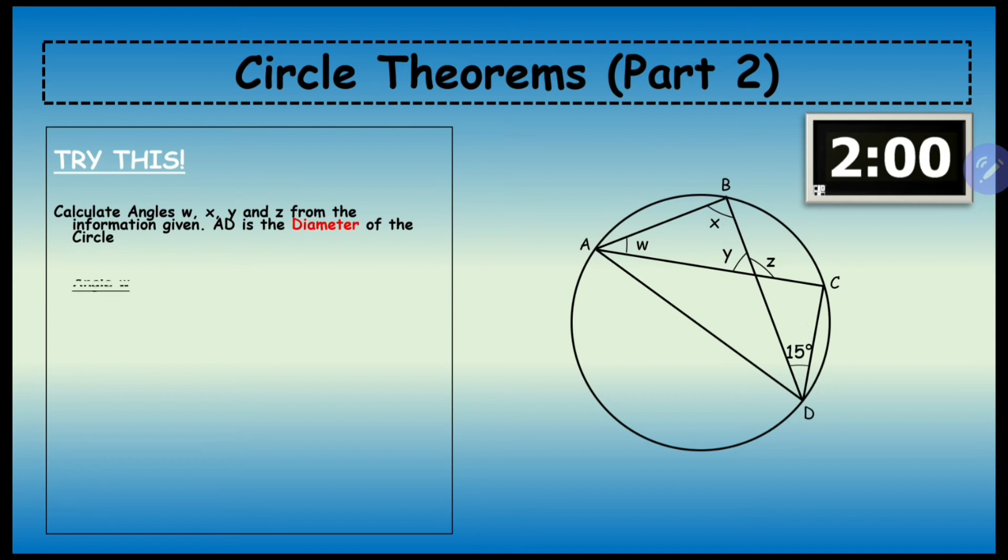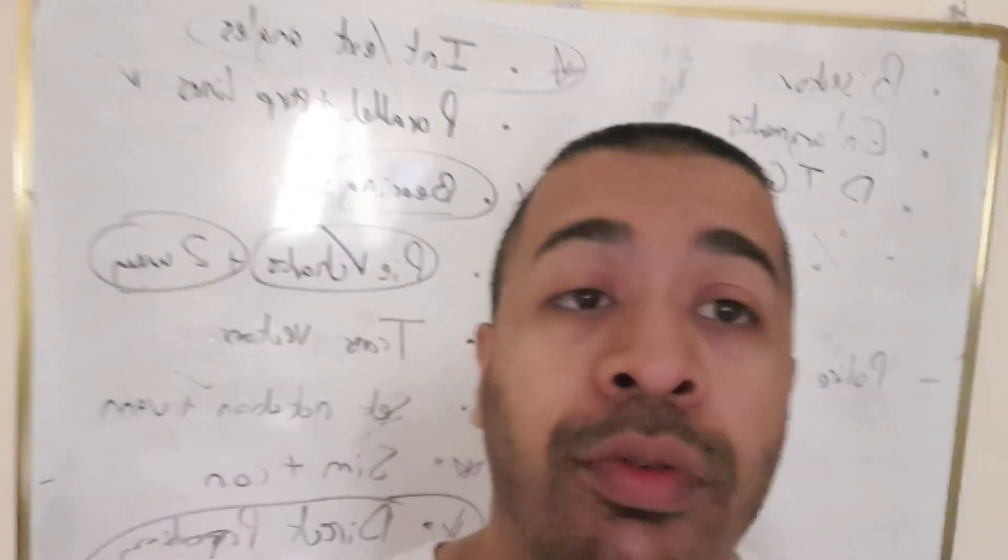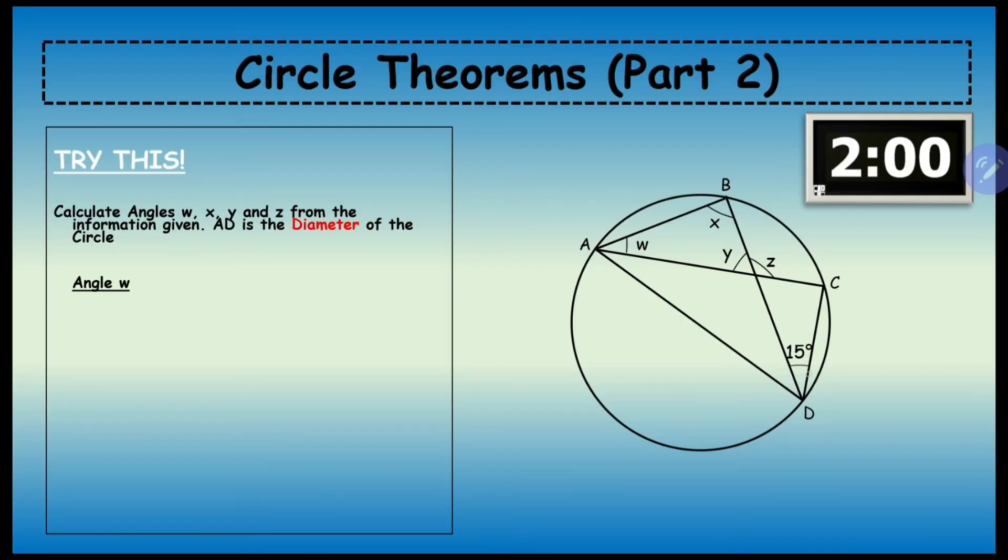Let's discuss using the theorem. You can see that this angle and this angle here are extended from the same point, so w is going to equal 15° because they are in the same segment.